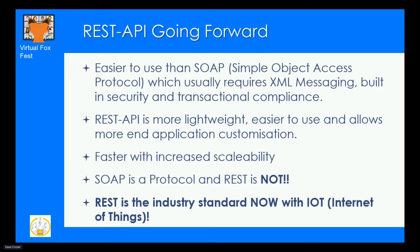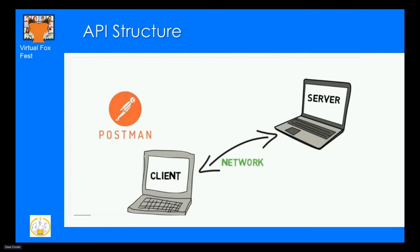Let's look at REST API structure. We have a client — our VFP program generating REST API requests — going up to the server. Think about the server as being SQL Server; that's the easiest way to think about it. You've got a network in between, and that network infrastructure and hardware has to be totally independent.